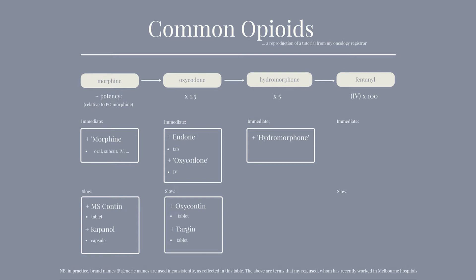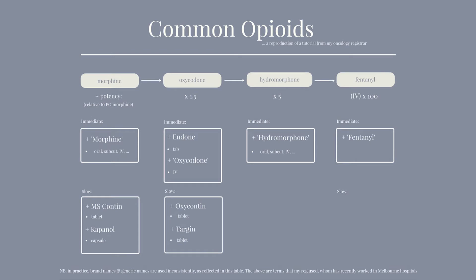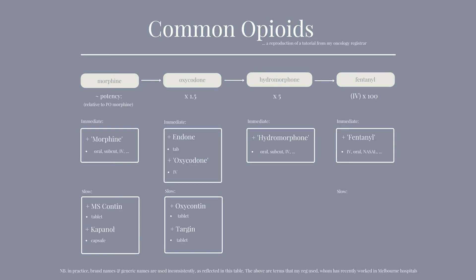Hydromorphone does not come in a slow release form - it only comes in immediate release, and can be given in multiple forms just like morphine: oral tablet, liquid, subcut, IV. Finally, fentanyl - our most potent common opioid. Immediate release forms come in IV and subcut. Fentanyl is also used for younger children in the emergency department, given intranasally. The slow release version of fentanyl is the patch, and one patch is used over 72 hours.